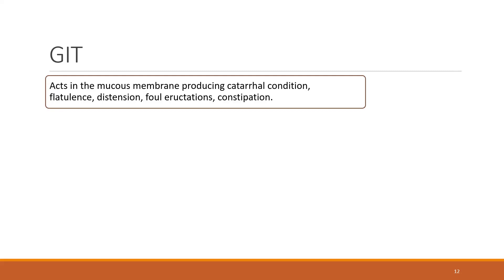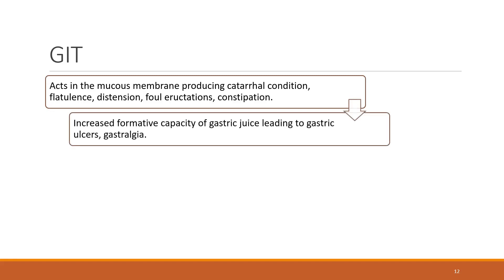Faulty digestion leads to putrefied food in the stomach, which produces offensive flatulence. That is why carbo-veg has that potbelly, always filled with gas — especially in the upper abdomen. Carbo-veg has upper abdomen distension; lower abdomen, you have lycopodium; the whole abdomen, you have china. Increased formative capacity of gastric juice leads to gastric ulcers and gastralgia — stomach pain.